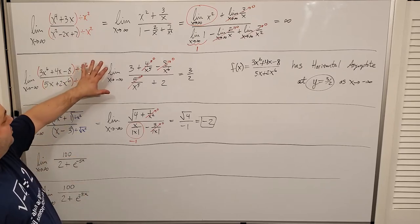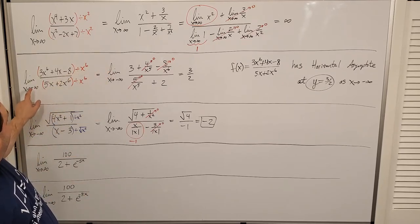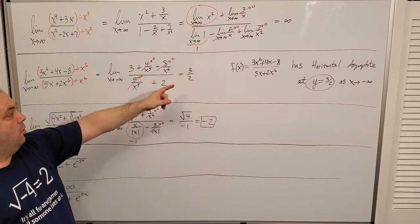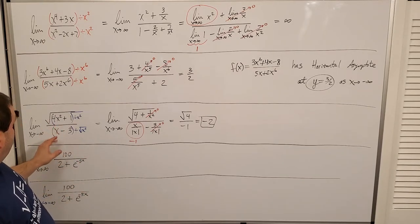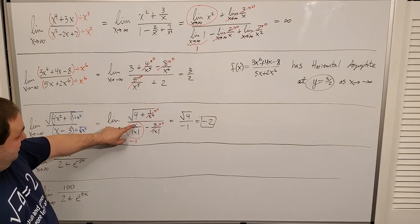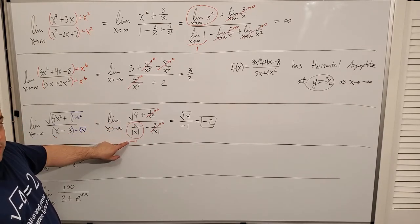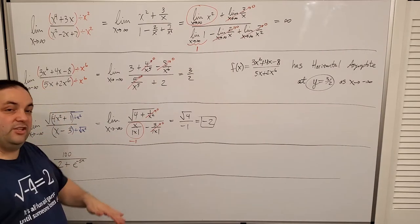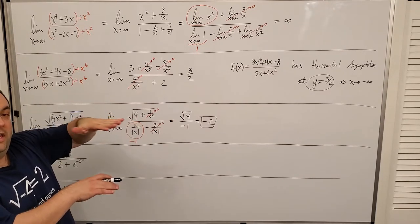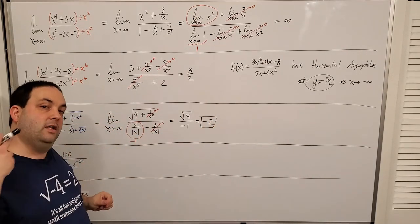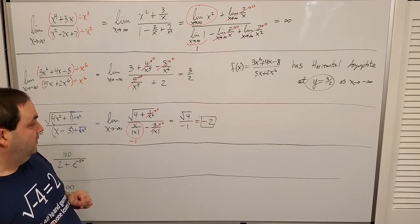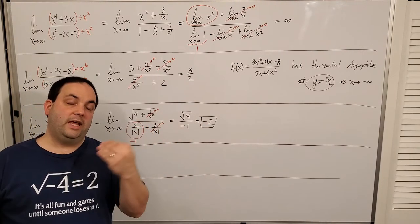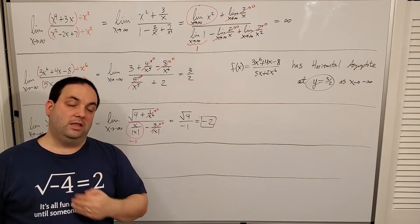But here's the kicker. The last example gave the same answer whether it was negative or positive infinity — the horizontal asymptote was the same on both sides. But on this radical function, if this were a positive infinity limit, this piece would have just been positive one, and we would have got positive two as an answer. So this particular function has two separate horizontal asymptotes — one on the positive infinity side and one on the negative infinity side. This function has a horizontal asymptote of negative two just on the negative infinity side, the left-hand side of the graph.